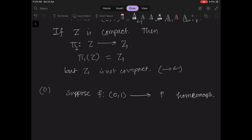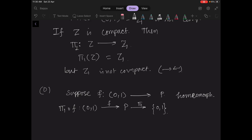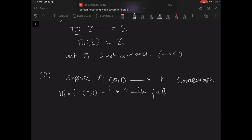Then look at this: pi 1 compose F from 0,1 to P to 0,1. Now F is continuous and pi 1 is also continuous. If F is a homeomorphism, then at least this image under pi 1 of F of 0,1 has to be connected, but this is a disconnected set 0 comma 1.